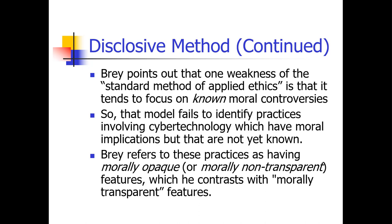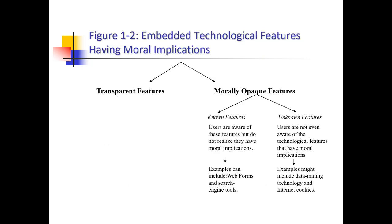Bray will refer to these practices as having moral opaqueness or moral non-transparency features — meaning you can compare and contrast moral transparency and opaque features. A transparent feature can be either actually transparent or non-transparent. If we're looking at morally opaque features, we can define them as known or unknown. Known features we're aware of, unknown features we're not. Unknown features could be like data mining based off of our cookies, whereas known features might be data analytics used from our web searches. We may not give specific permission to data mine us, but we know that when we do web searches, that's being tracked.